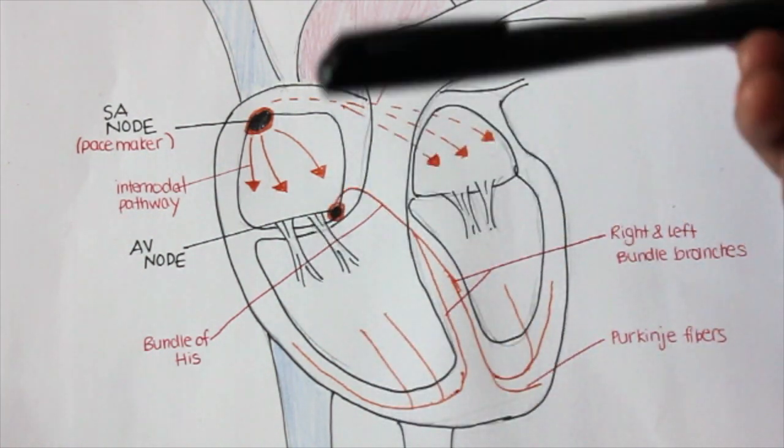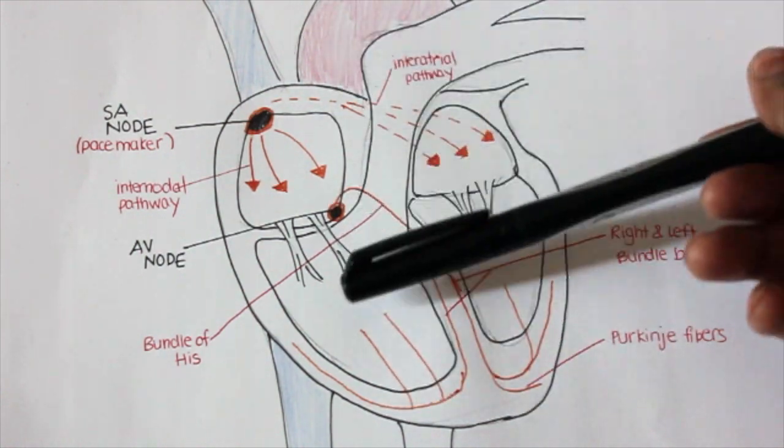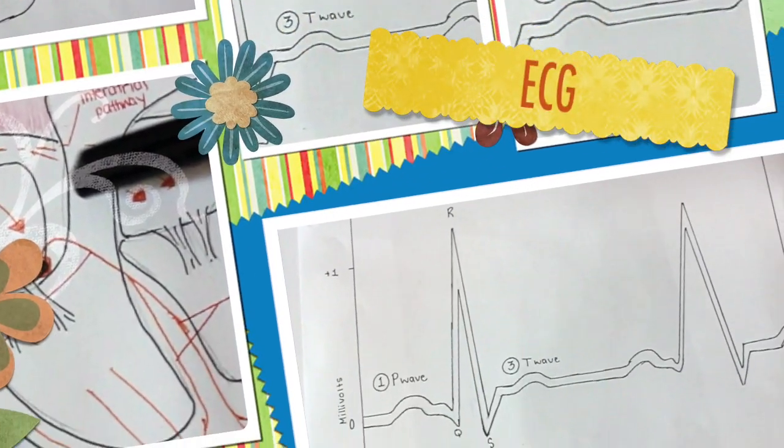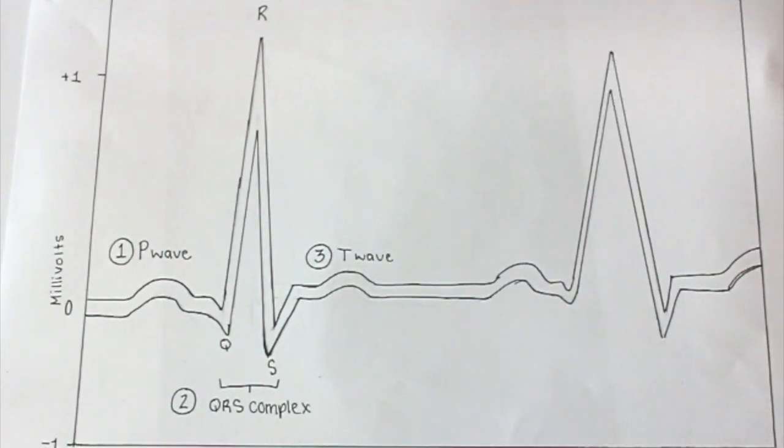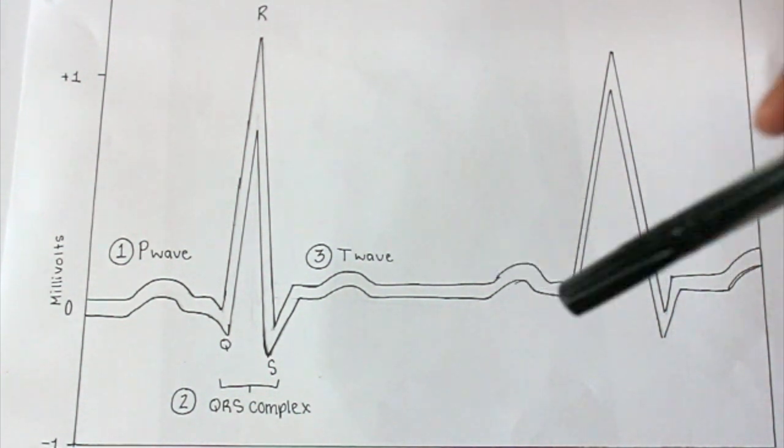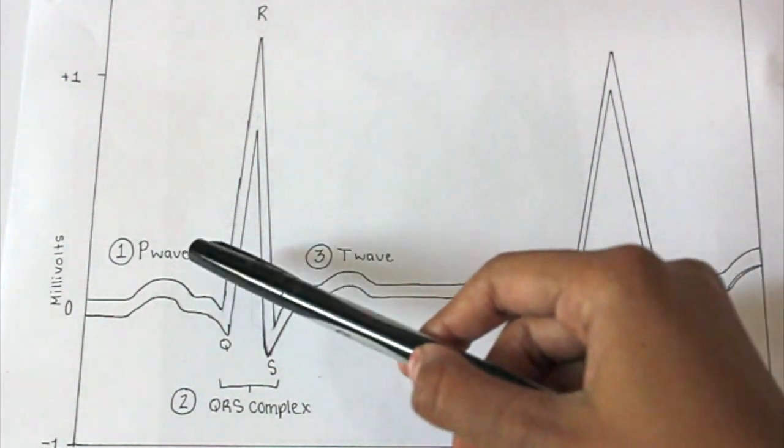The impulse pushes the blood out towards the aorta and the pulmonary artery. An ECG records the events of a single cardiac cycle, basically recording the electrical events of the heart. There are three important parts: the P wave,